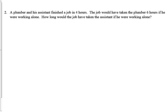In this one we have a plumber and his assistant. They finished a job in four hours — so that's the together amount. The job would have taken the plumber six hours working alone. How long would the job have taken the assistant working alone? We've got the plumber, I'll call him P, and the assistant, I'll call him A. The together amount is four hours, the plumber is six hours, and I'm looking for the assistant, so that's x hours.